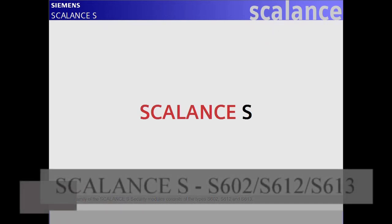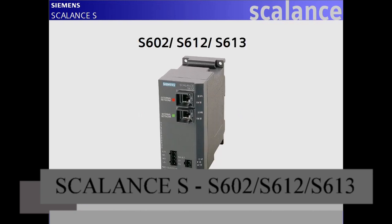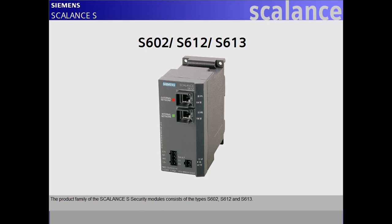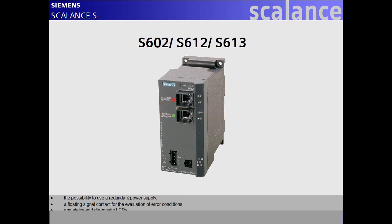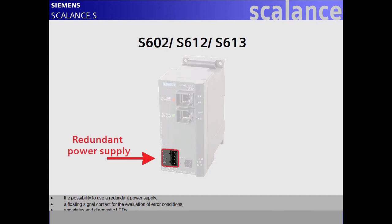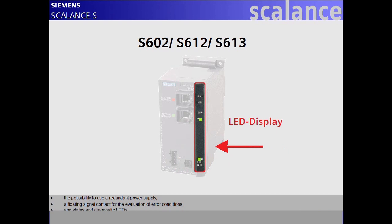The product family of the Scalance S security modules consists of the types S602, S612, and S613. The mechanical housing design is comparable to that of the X100 and X200 switches — a rugged industrial-use housing in S7300 design with degree of protection IP30, allowing flexible installation and high temperature ranges. Additional features include a redundant power supply option, a floating signal contact for error condition evaluation, and status and diagnostic LEDs.